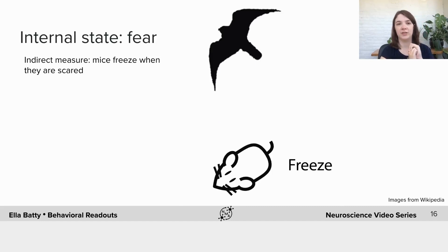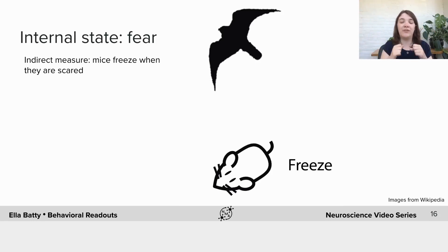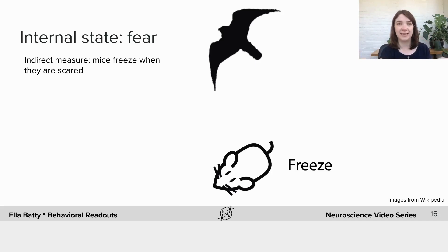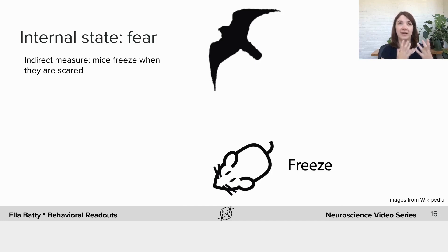You can also use natural behaviours to tell you about the internal state of the mouse. In the wild, if a mouse sees a predator — a bird overhead like an eagle — it will freeze and not move at all. We can take advantage of this in the lab and use freezing as an indirect measure of the fear of the mouse. So we can shock the mouse with electric shocks that scare it in an environment, and then if we put it back in that environment two days later, we know if it remembered that experience because it will freeze more. Similarly, we can pair an auditory tone with the electric shocks, and then we can see if the mice are conditioned to associate the tone with the shock — because they'll freeze just when they hear the tone.